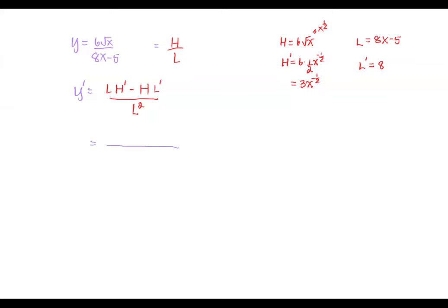The low function is the quantity 8x minus 5. The d high is 3x to the power negative 1 half, minus the high — which is the numerator function 6 times square root x — multiplied by d low, which is 8, all divided by the low, or 8x minus 5, quantity squared.